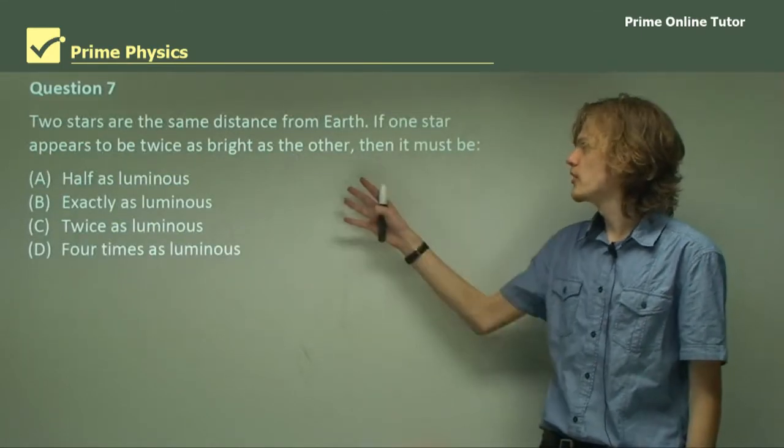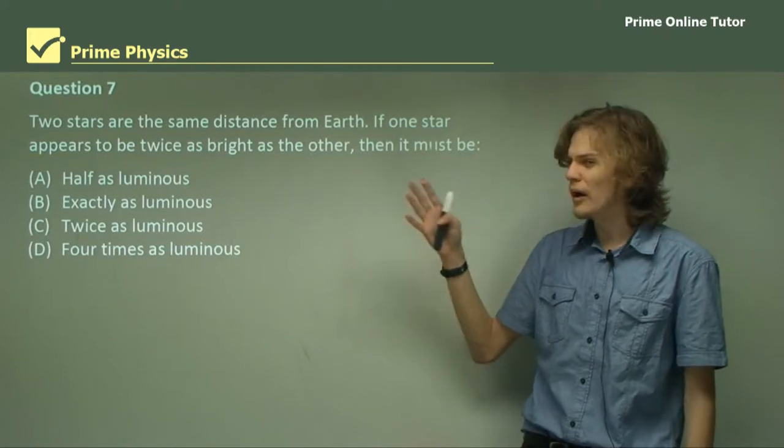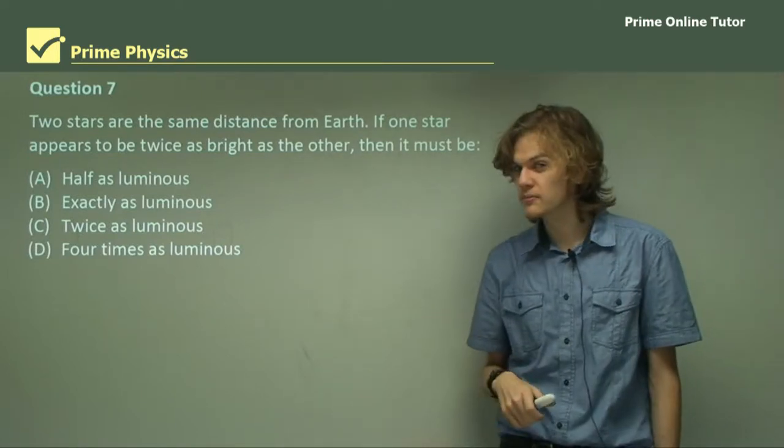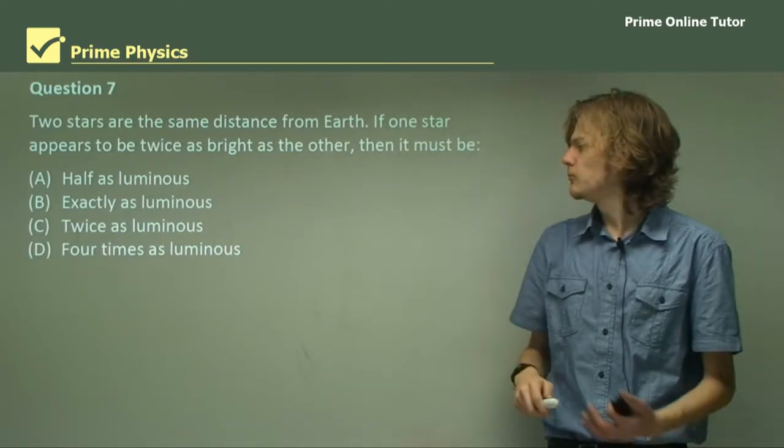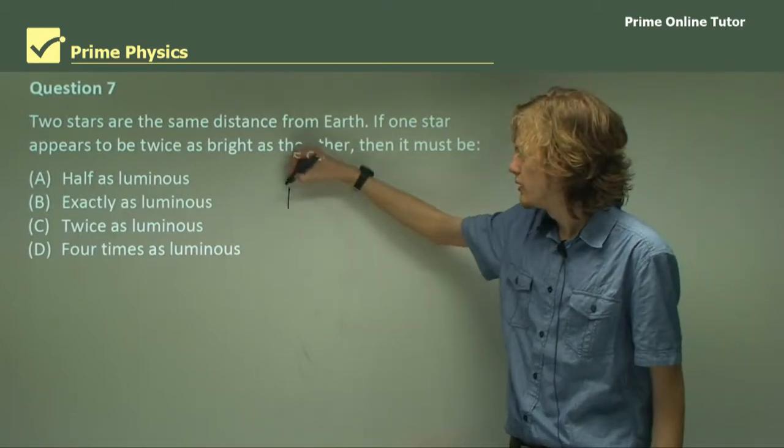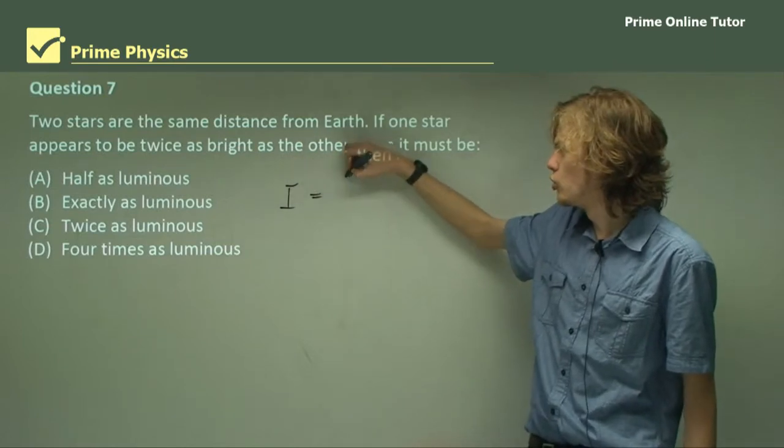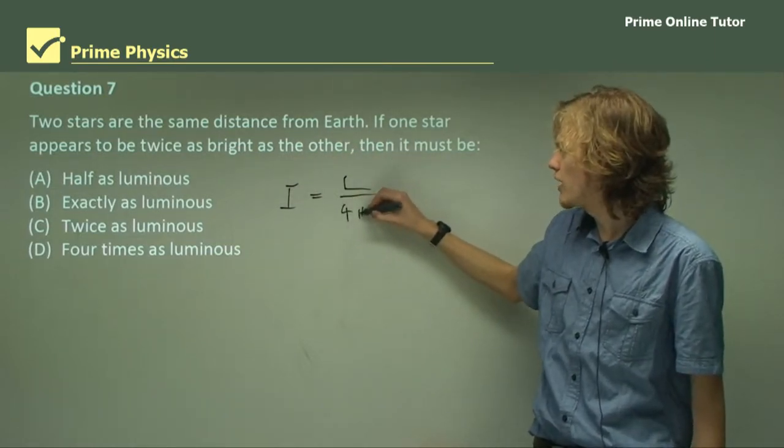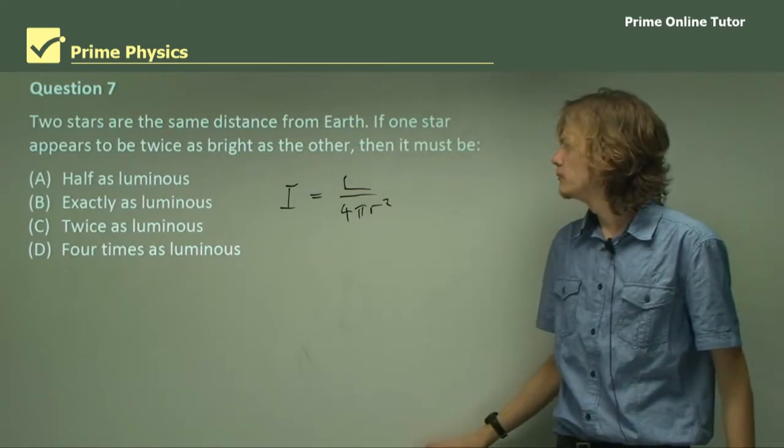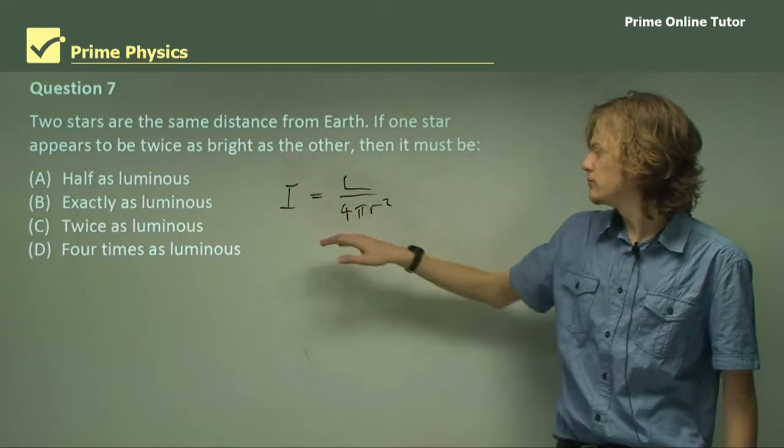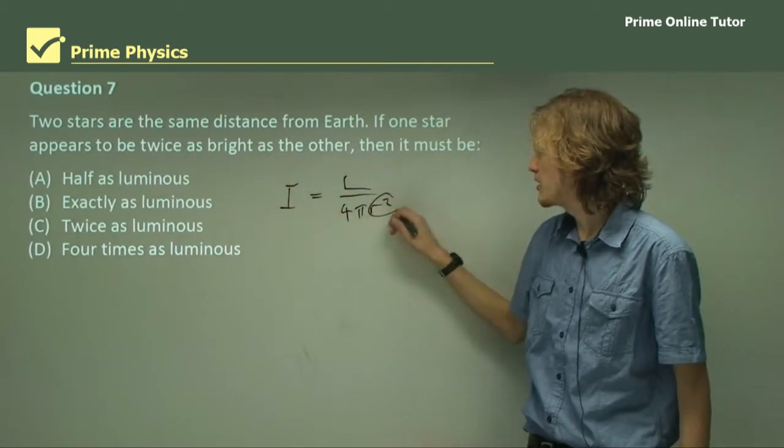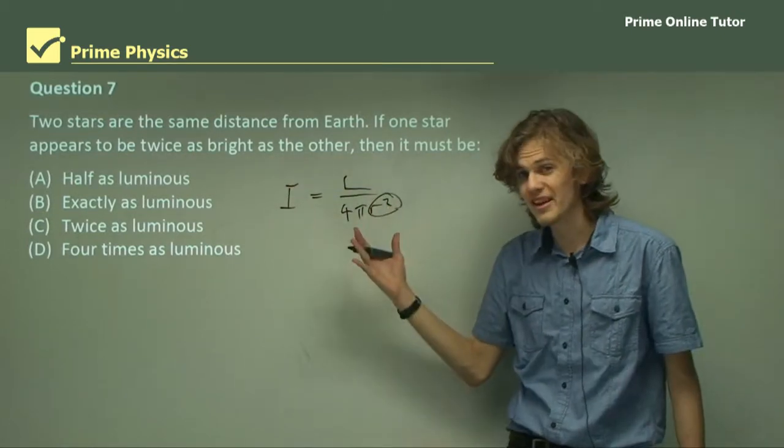Question 7. Two stars are the same distance from Earth. If one star appears to be twice as bright as the other, then it must be half, exactly twice, or four times as luminous. Looking at the equation, intensity equals luminosity over the surface area of the sphere. If something's twice as bright and the distance doesn't change, then there's only one other thing that can change, and that's the luminosity.